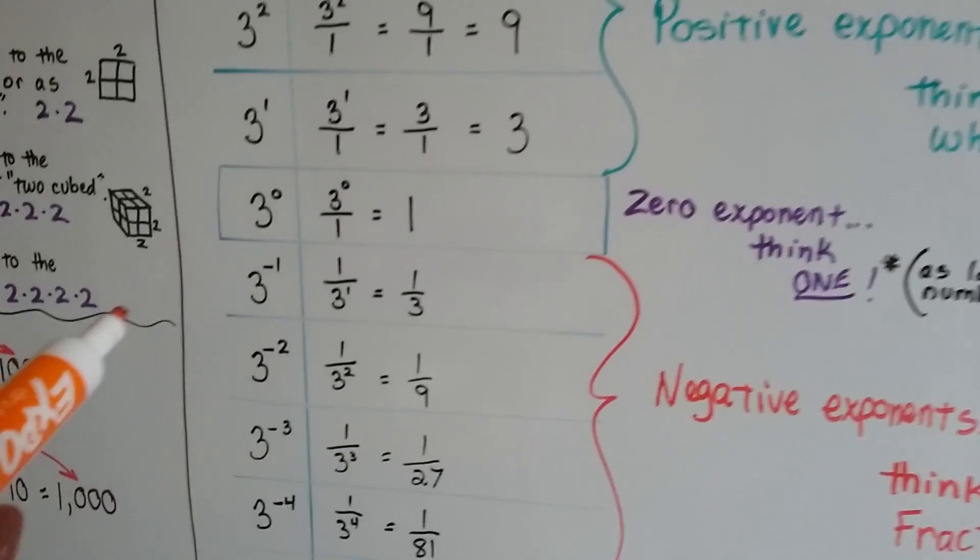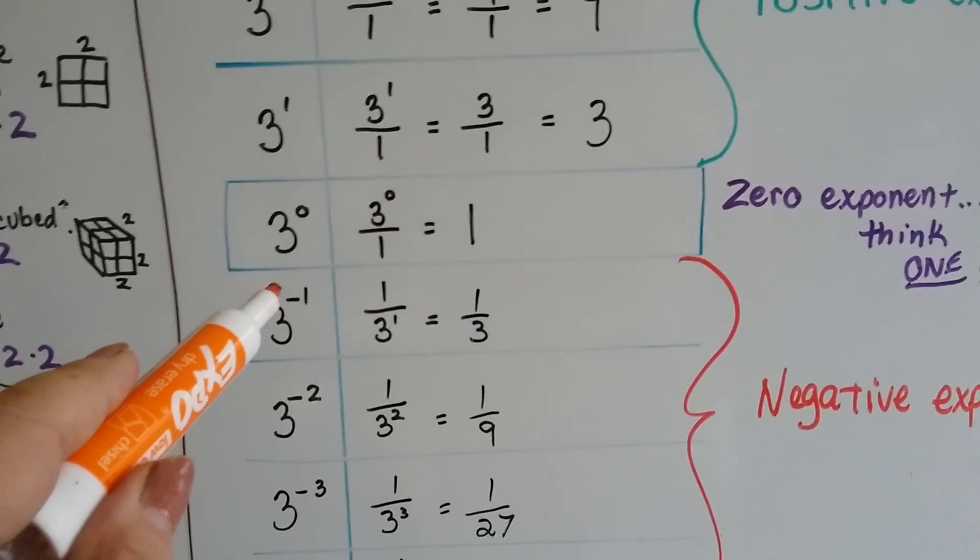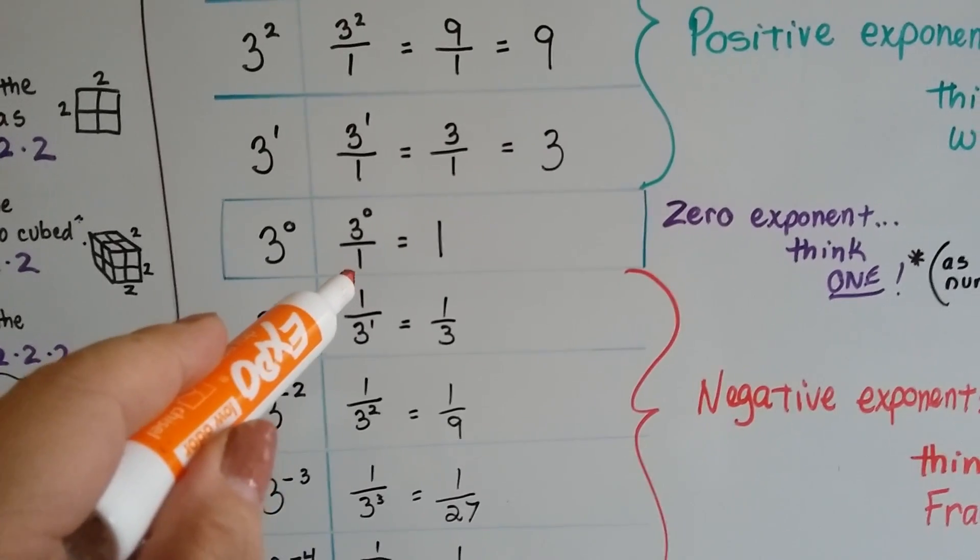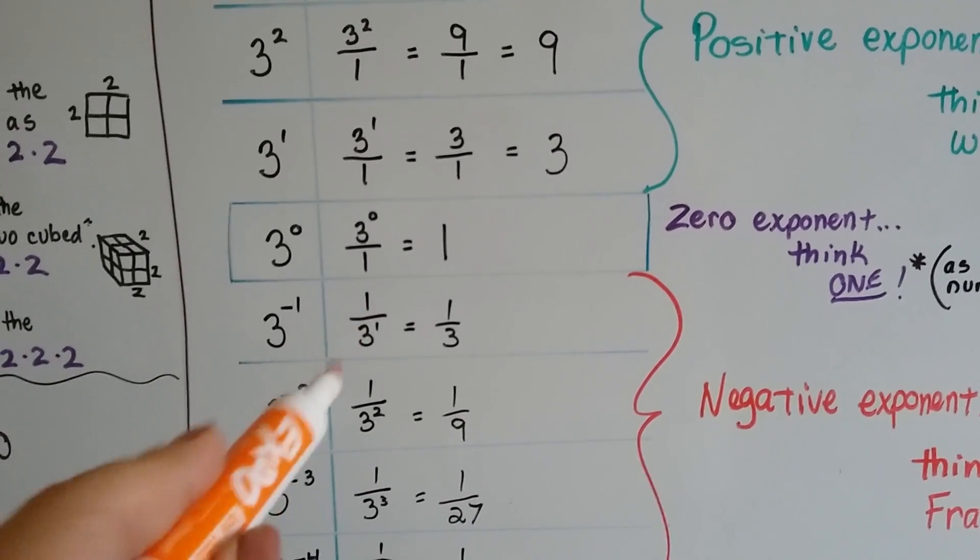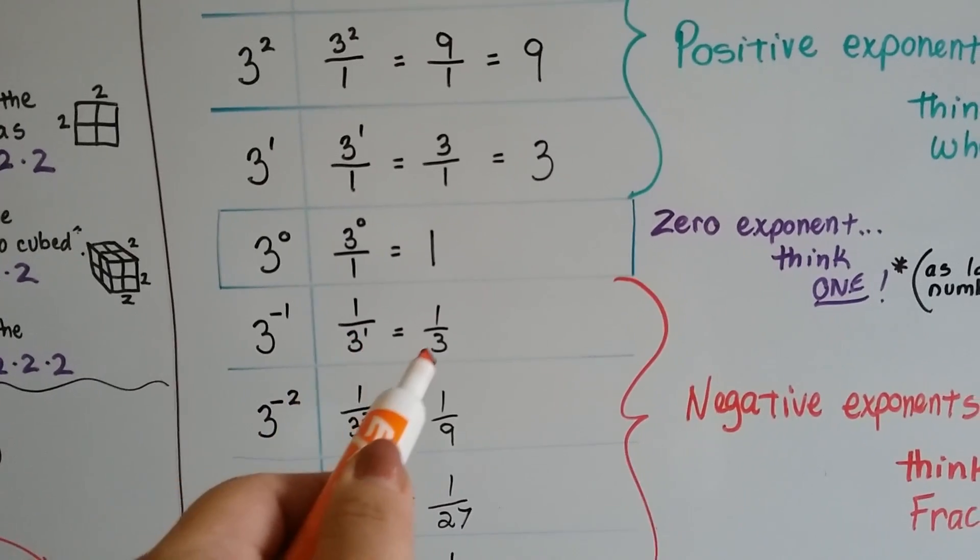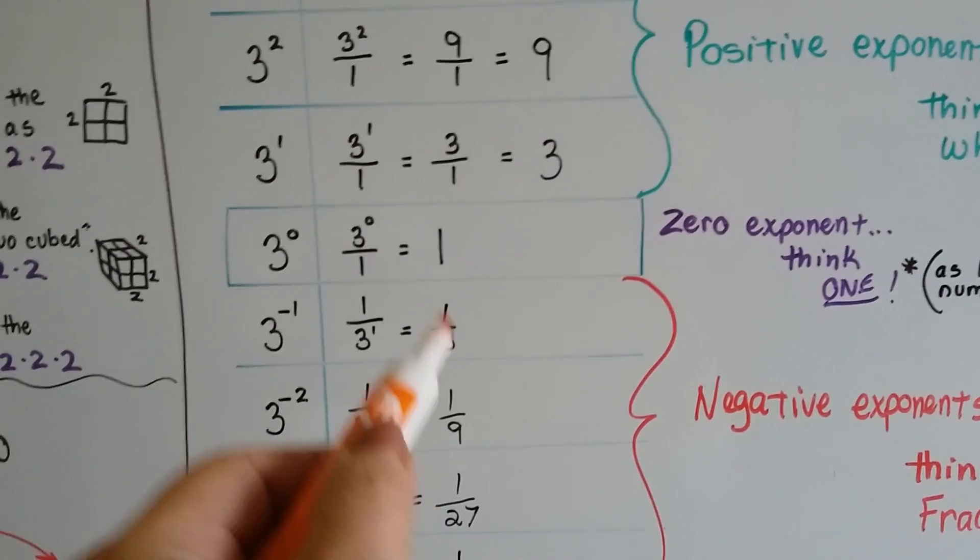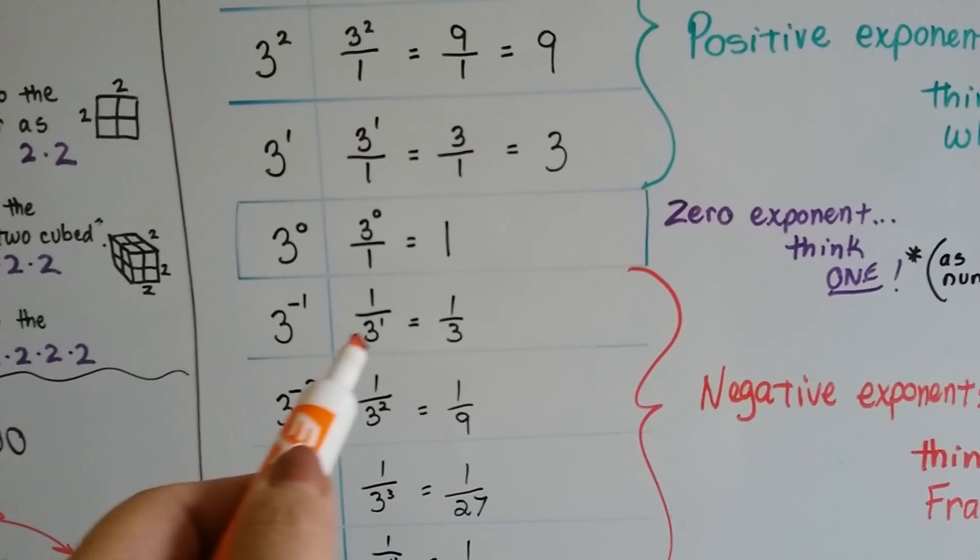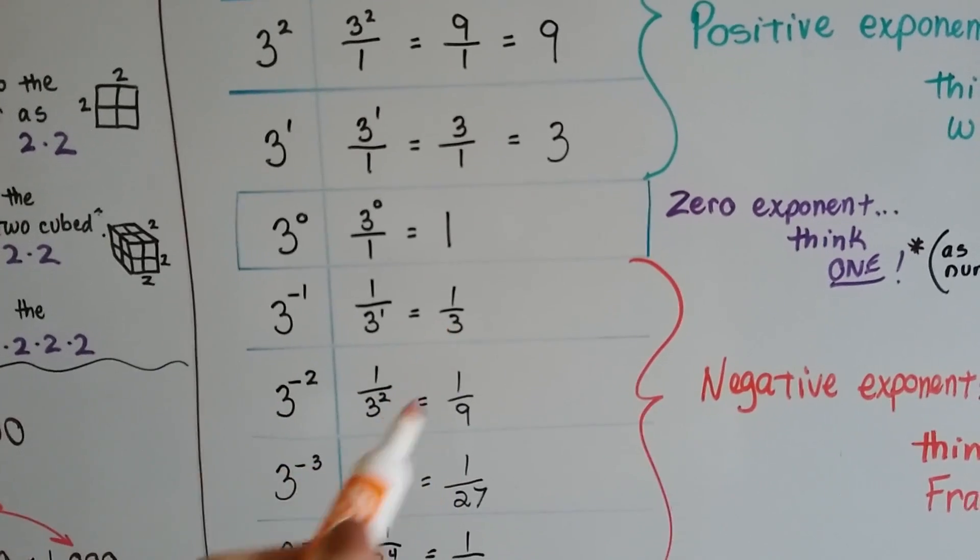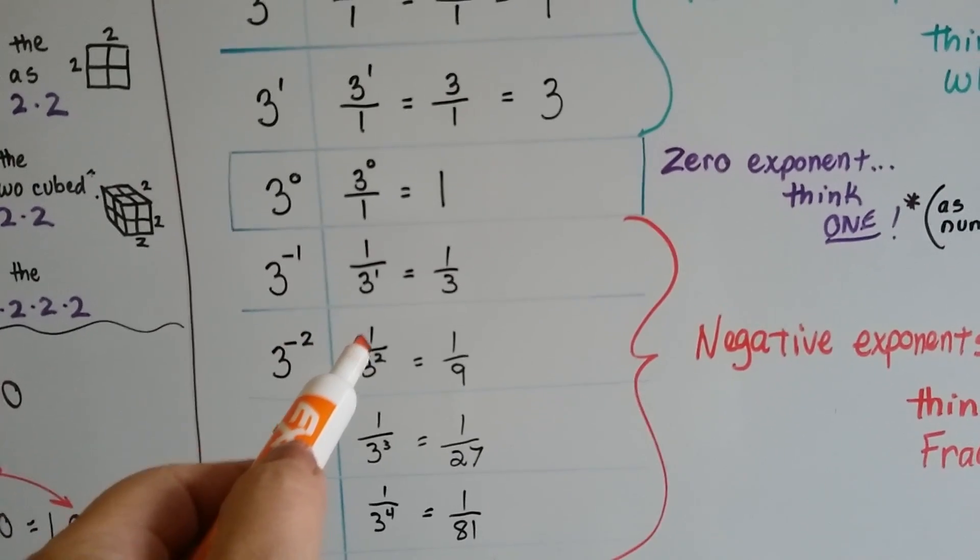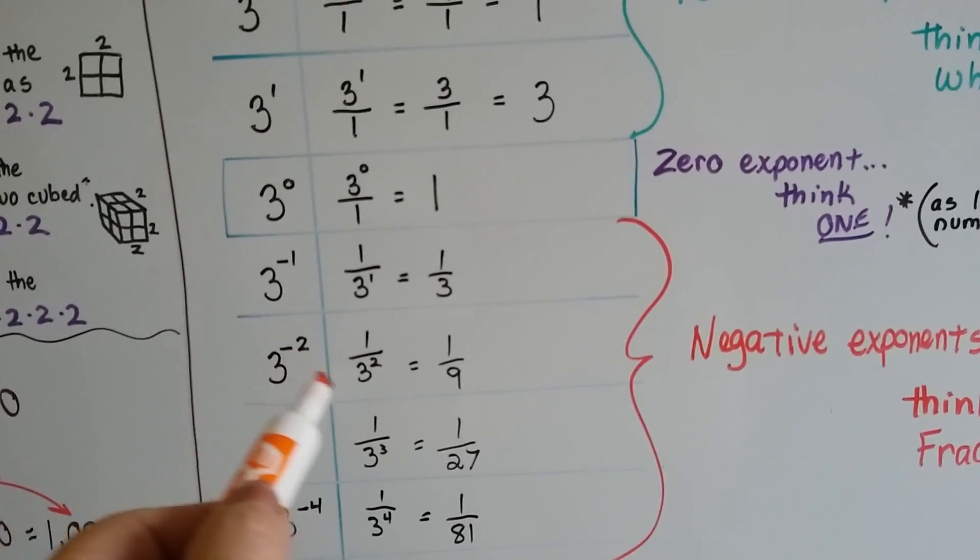Now, we're going to get into 3 to the negative 1 power. The negative sign disappears as we put it under the 1 as a fraction. It becomes 3 to the first power as the denominator. So, the denominator is a 3. Just like this 3 to the first power became a 3, this one became a denominator of 3. And these all are the denominators. We put them under the 1 and take away the negative sign.